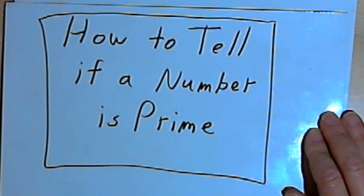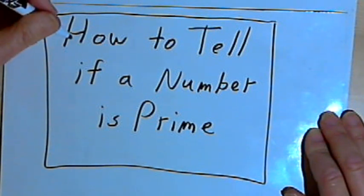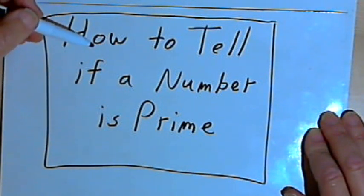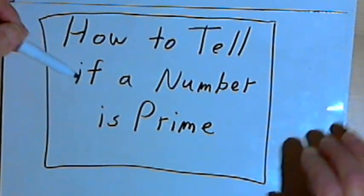This video is provided as supplementary material for courses taught at Howard Community College. In this video I want to talk about how you can tell if a number is a prime number or a composite number.